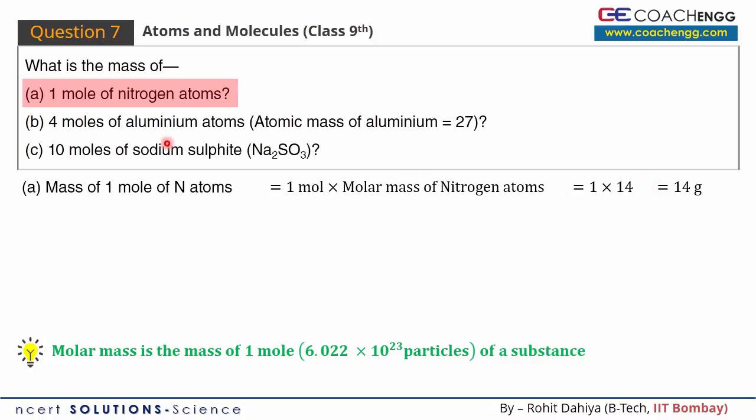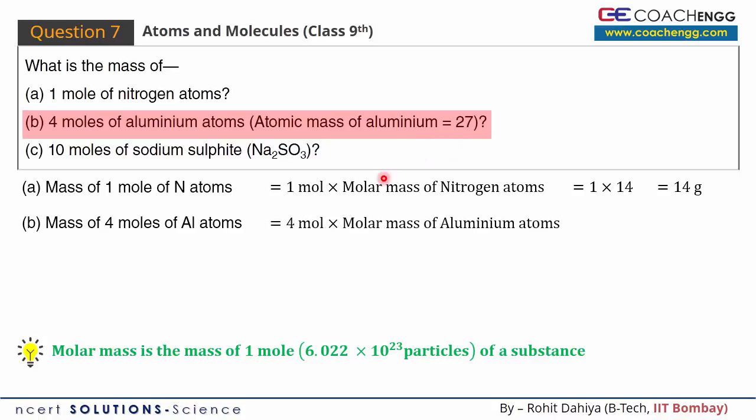Let's move to B part, where 4 moles of aluminium atoms are given. Aluminium's atomic mass is 27 unified atomic mass units. That is, Aluminium's molar mass is 27 grams per mole. So 4 mole aluminium atoms' mass will be 4 into molar mass of aluminium atoms. This will be equal to 4 into 27 which is equal to 108 grams.